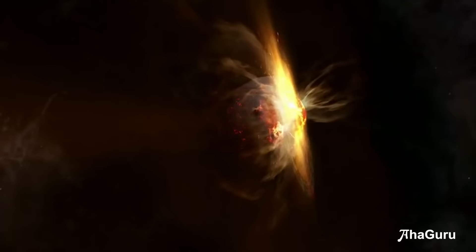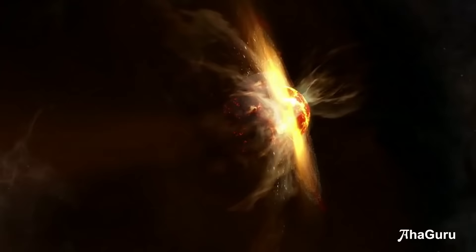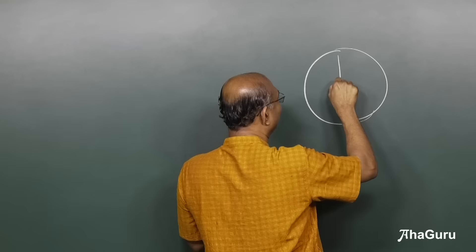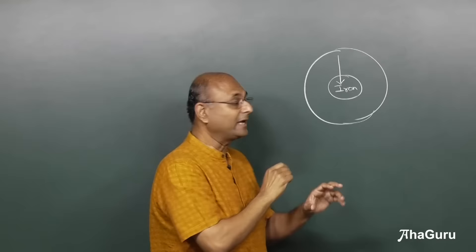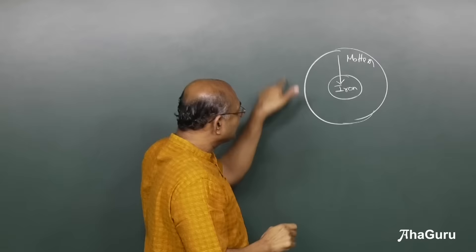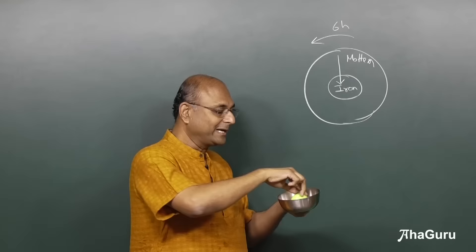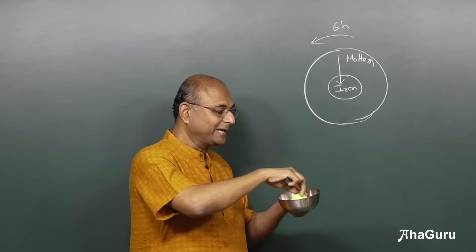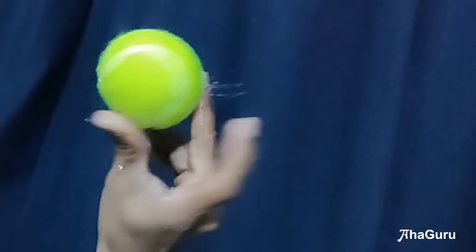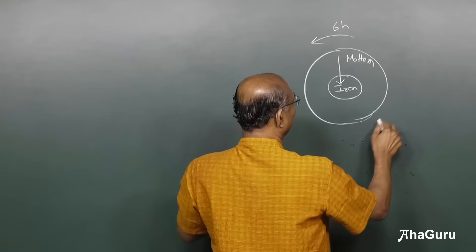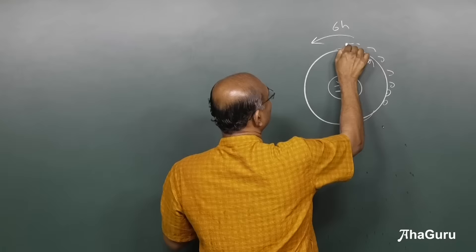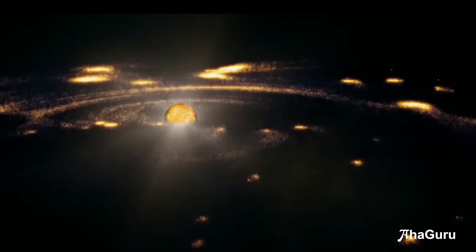When Theia hit Gaia, the whole Earth became molten and the iron went to the center. With this liquid lava Earth spinning at 6 hours, let's see what would happen. Using a bowl of water with a tennis ball — think of this as liquid on the surface — when you spin it very fast, you can see that particles start spilling out. Those molten lava pieces that spilled out, pulled together by gravity, collided and became one large piece — and that is what we call the Moon.